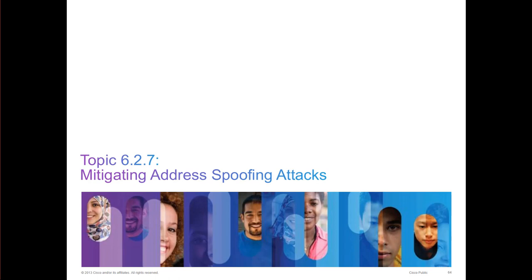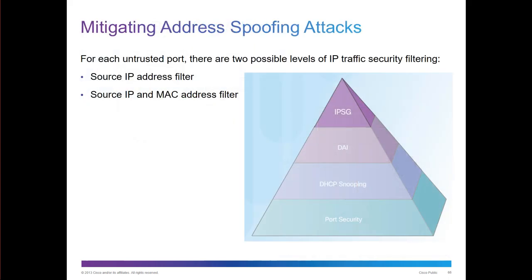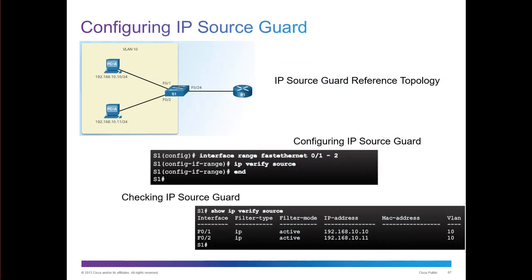Mitigating address spoofing attacks involves protecting against switch port spoofing and MAC address changes. For each untrusted port there are two possible levels of IP traffic security: filter based on source IP, or filter based on source IP and MAC address. That's part of IP Source Guard (IPSG), where you can verify sources so that anything coming in would have to be verified.